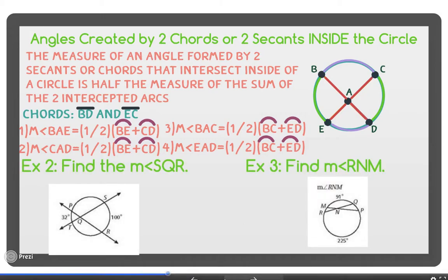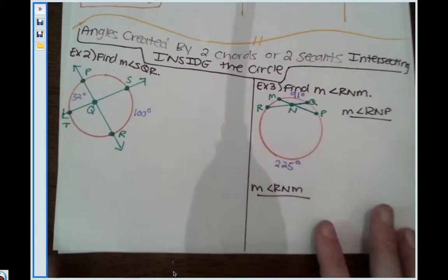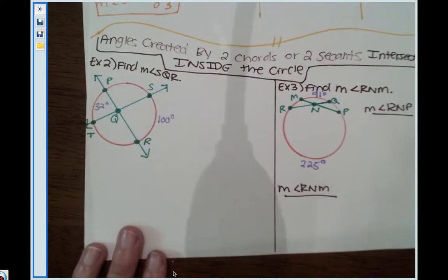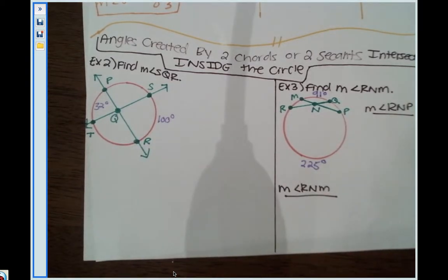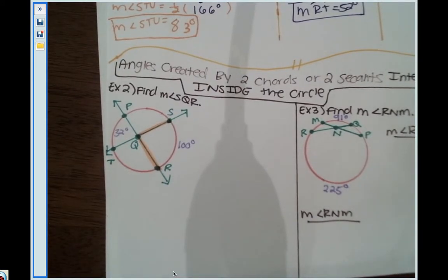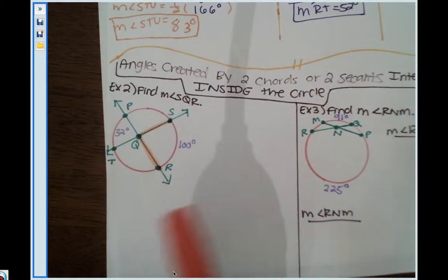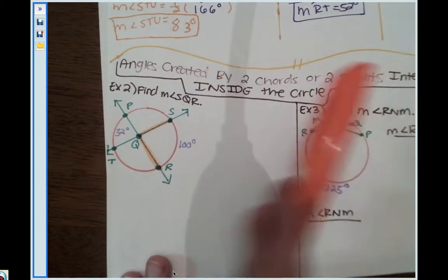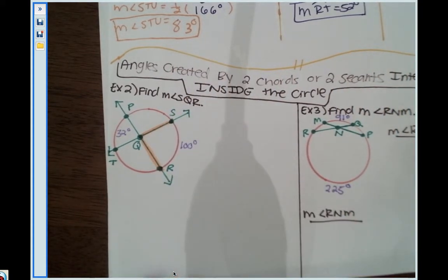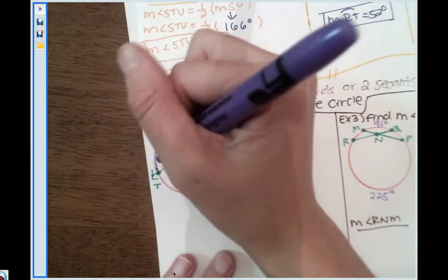Now let's solve the two examples using this property. First, we need to find the measure of angle SQR. Since this angle opens to the right, we're looking for intercepted arcs to the left and right of it. The two intercepted arcs are arc SR and arc PT.